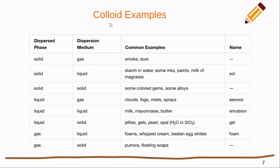Here are some common examples of colloids by phase. A solid dispersed in a gas would be like smoke or dust. A solid dispersed in a liquid includes milk, milk of magnesia, many paints, and some inks. A solid dispersed in a solid can be true for things like gems and some alloys — they're actually not true solutions but instead are colloids.